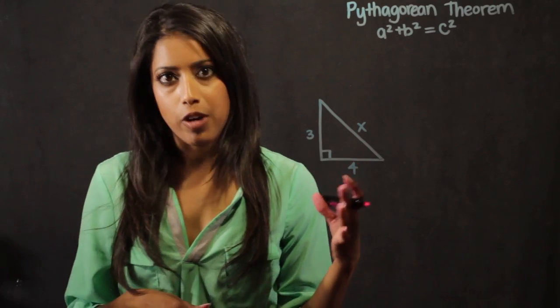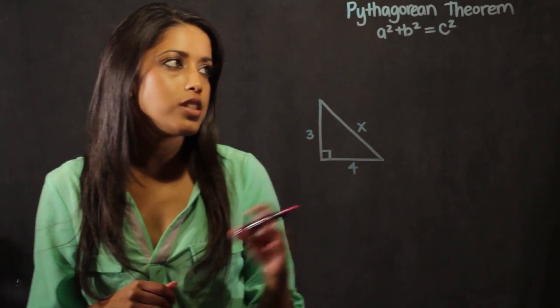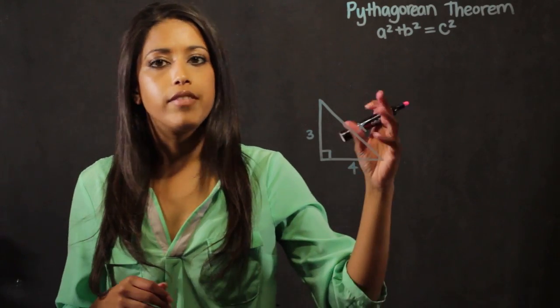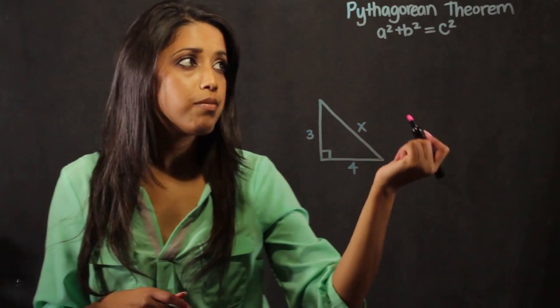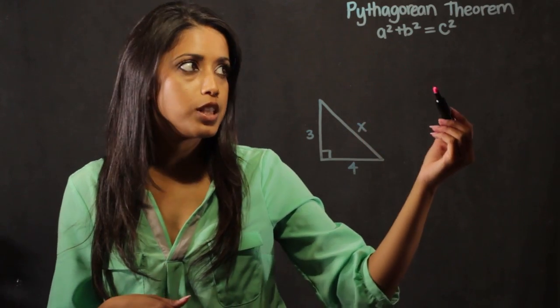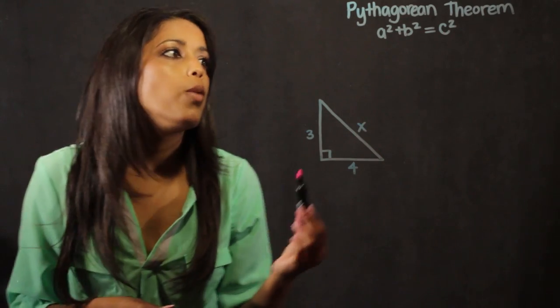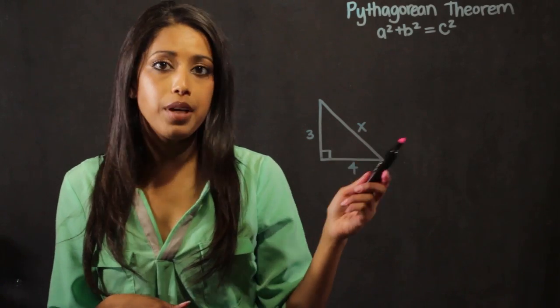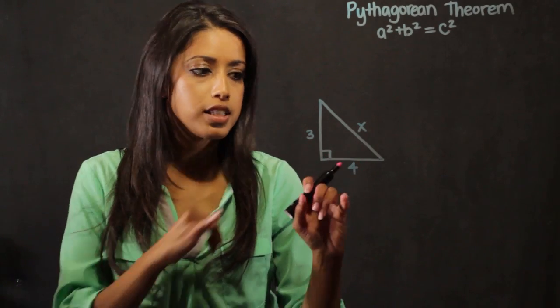This example that I have here is a triangle and when we use a distance formula it can be derived from the Pythagorean theorem. The Pythagorean theorem is a squared plus b squared equals c squared where a and b are both the sides of a triangle.